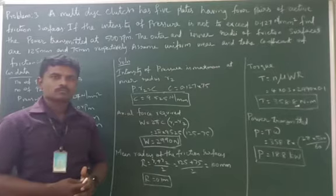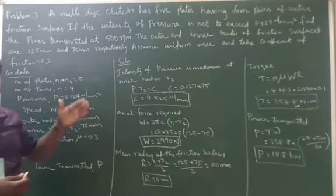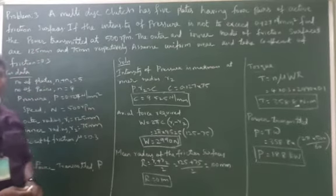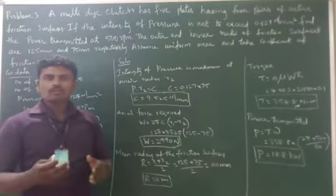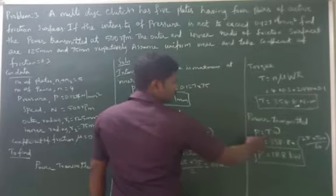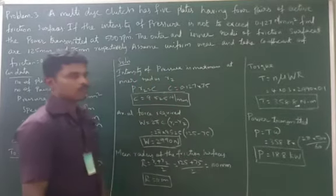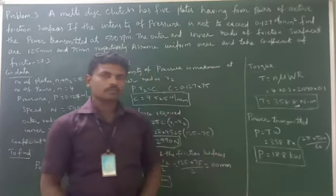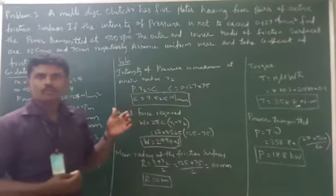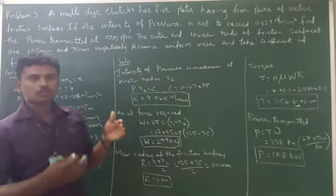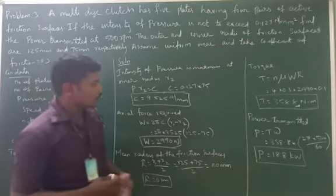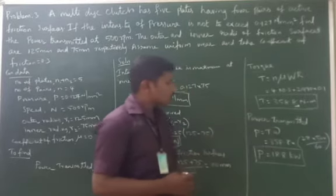Now how we can solve this problem? First we need to know the formula. We need to find power transmitted, using the formula: Power equal to T into omega. Here we don't know the value of T (torque) or omega. Omega is angular velocity, which we can find directly using 2 pi N divided by 60. But we don't know the value of torque, so that we need to find.